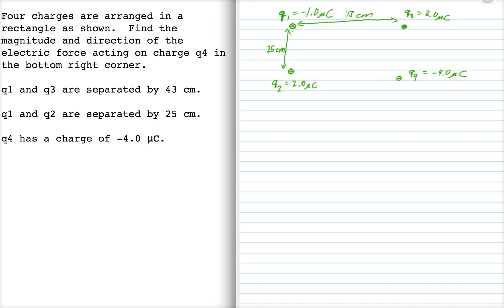We'll start with Q1. Alright, so Q1 is at a distance of 49.7 centimeters from Q4. You can get that from the Pythagorean theorem.